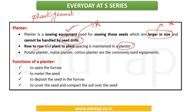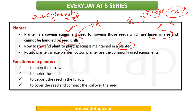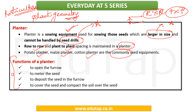Plant geometry concerns the spacing between plant to plant and row to row, represented as P×P and R×R. There are questions on plant spacing as well, which is why in the horticulture videos we kept in mind the spacing required for important fruit crops. There are different types of planters like potato planter, maize planter, and cotton planter — these are commonly used equipment.